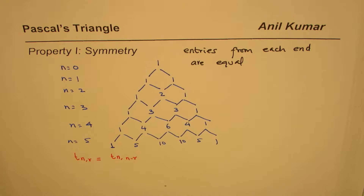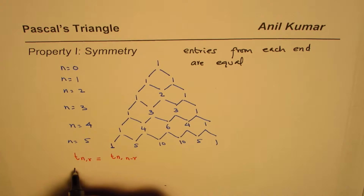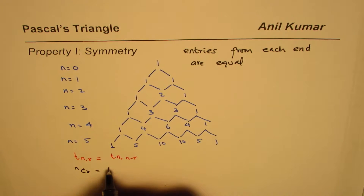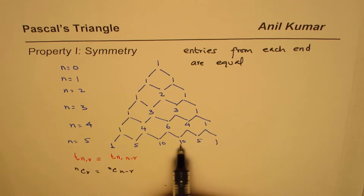This is called the property of symmetry — we'll number this as Property 1 for Pascal's triangle. We also link Pascal's triangle with binomial coefficients, so from here we can say that nCr equals nC(n minus r). This property holds for binomial coefficients since all entries in Pascal's triangle are coefficients for binomials.